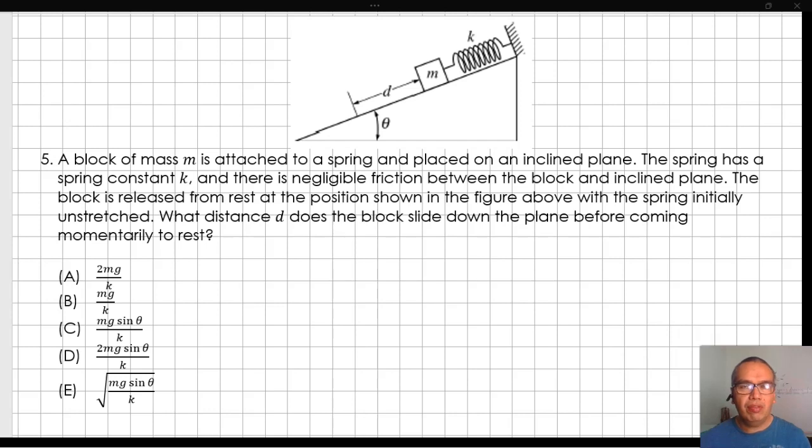5. A block of mass M is attached to a spring and placed on an inclined plane. The spring has a spring constant K, and there is negligible friction between the block and the inclined plane. The block is released from rest at the position shown in the figure above with the spring initially unstretched. What distance d does the block slide down the plane before coming momentarily to rest?